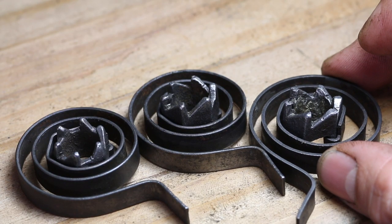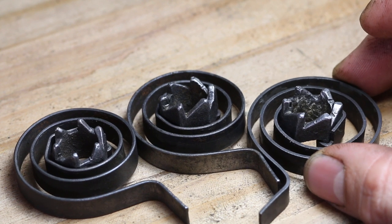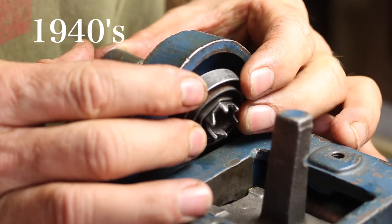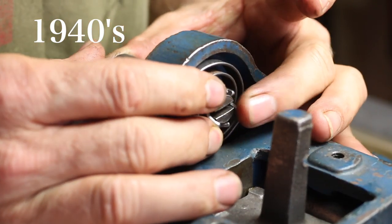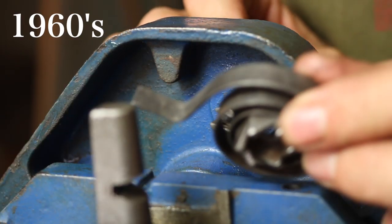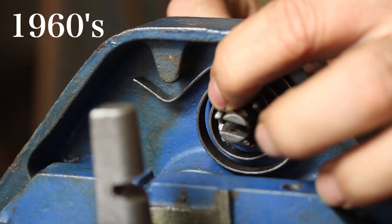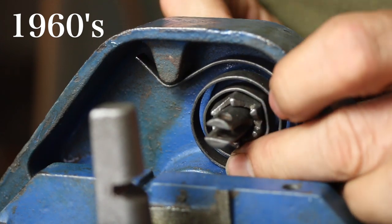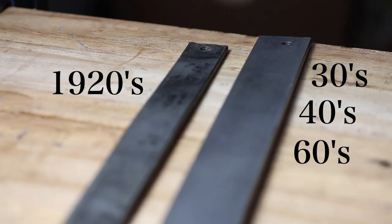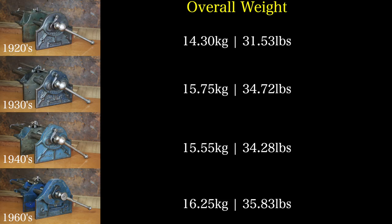There is very little difference in the springs, other than their positioning behind the faceplate. Regarding the lever bar, the 1920s version is noticeably smaller than the others. Let's have a look at the overall weight of each version.